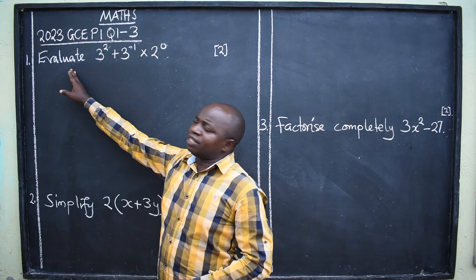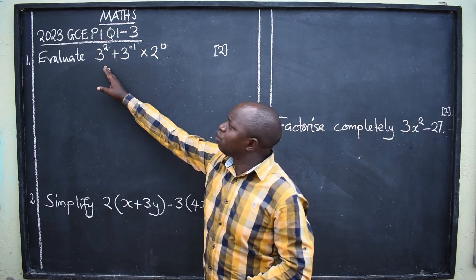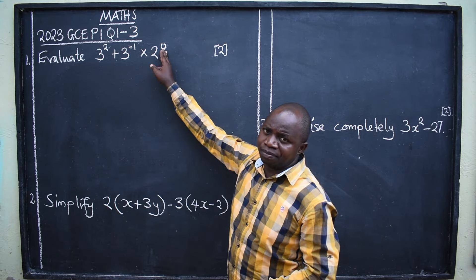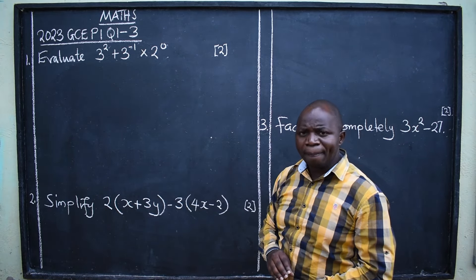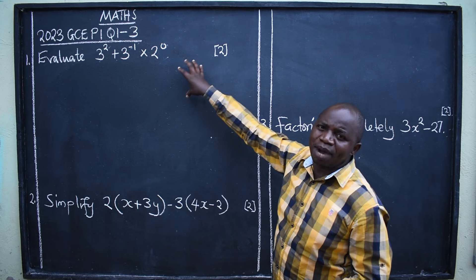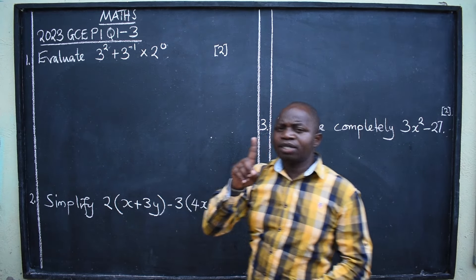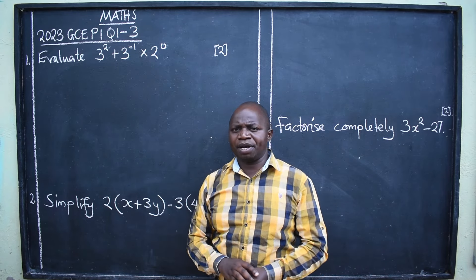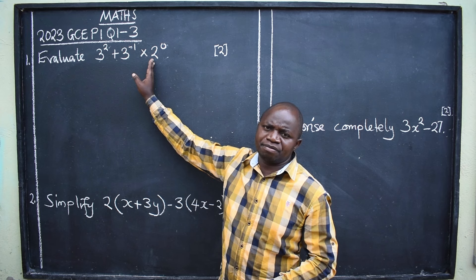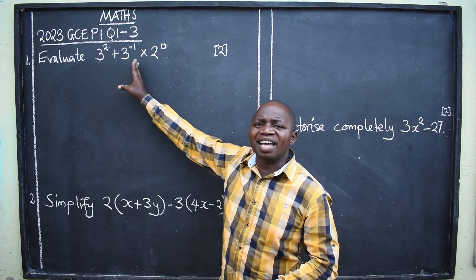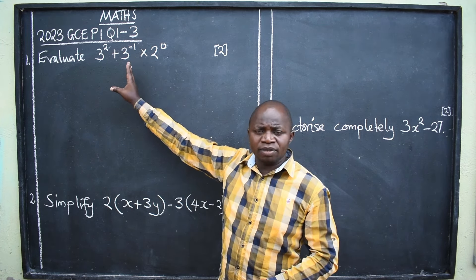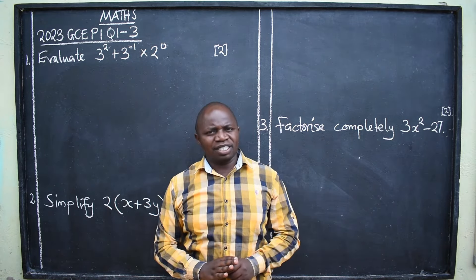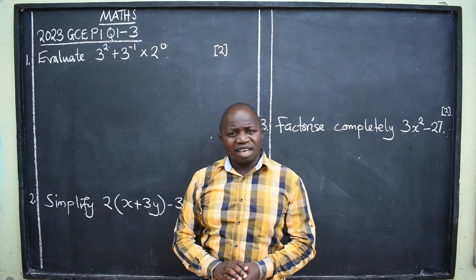The first one here says evaluate 3 to the power 2 plus 3 to the power negative 1 times 2 to the power 0. Two marks. Now you need to get these two marks. How? One, understand the topic from which the question is coming from. Identify the topic. What topic is this? These are indices or index notation. That's the first thing. But if you cannot identify the topic, definitely it will be hard for you to answer that question.